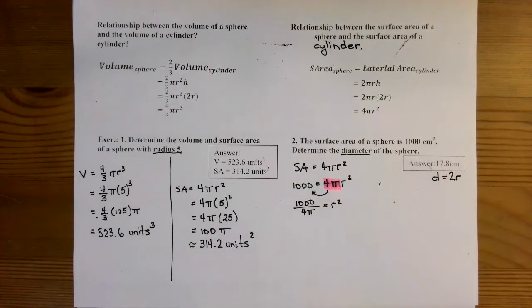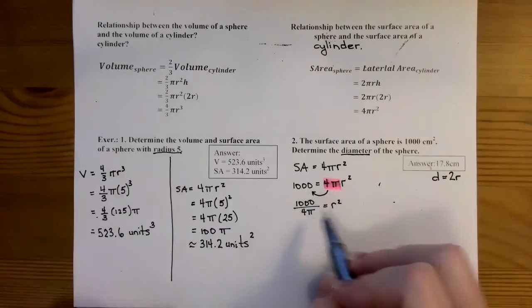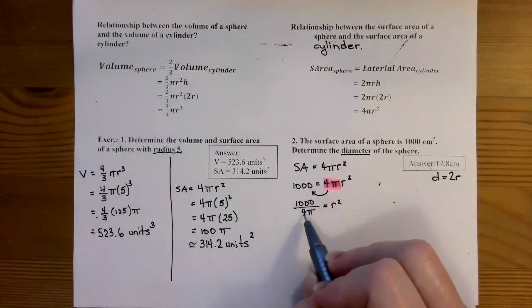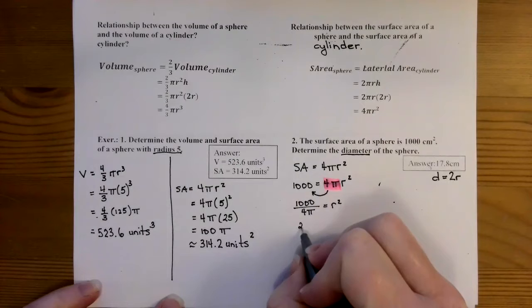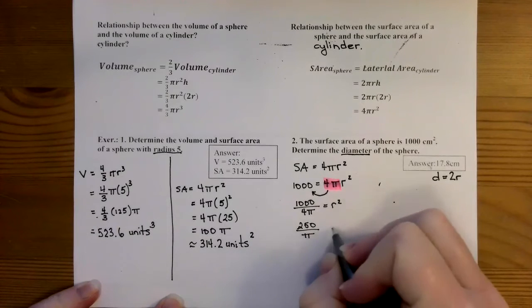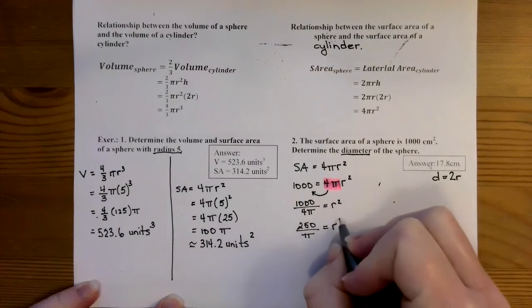And now I'm going to simplify this a little bit. I know that I can divide 1,000 by 4, and so I end up with 250 over π is equal to r².